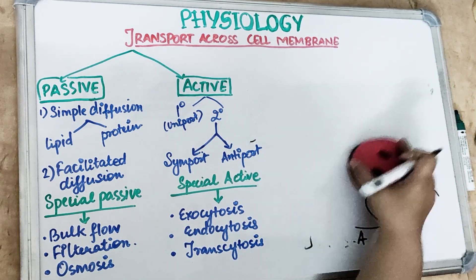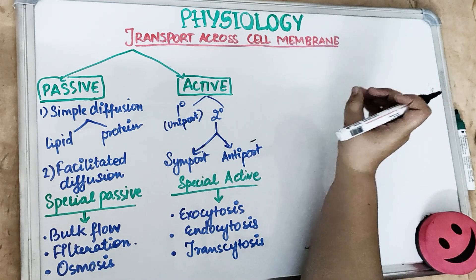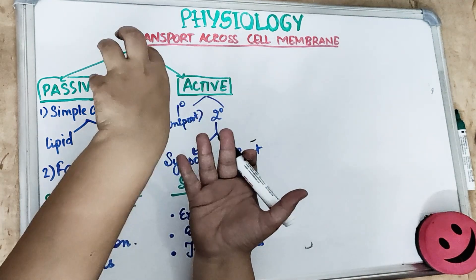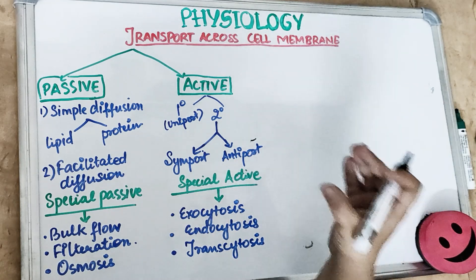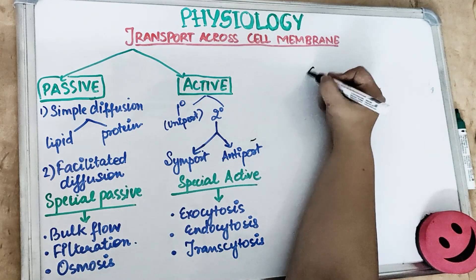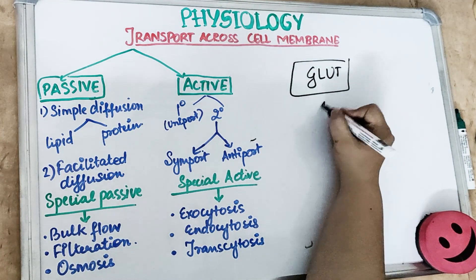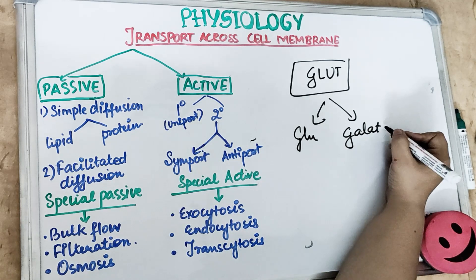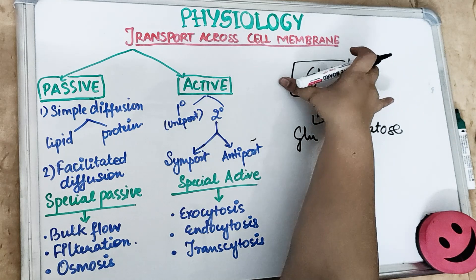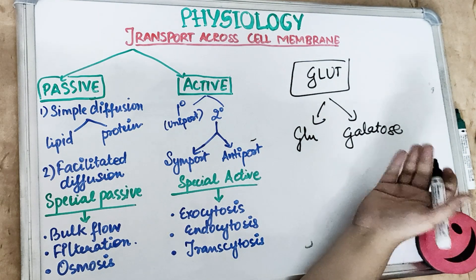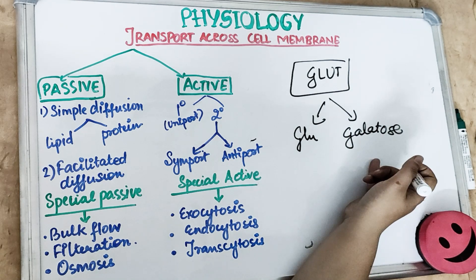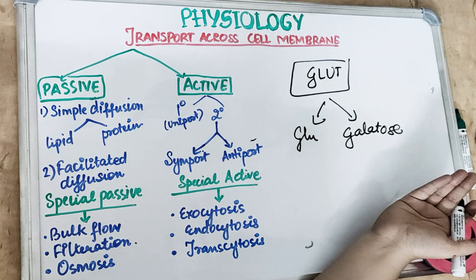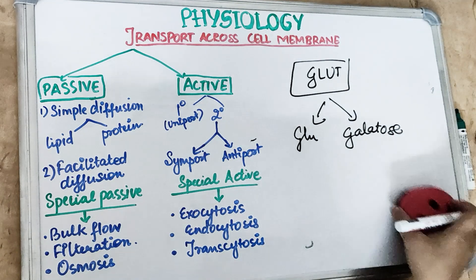Facilitated diffusion occurs through a carrier protein. It has a property called stereospecificity - certain carrier proteins are specific for certain substances. For example, GLUT is a carrier protein that transports glucose and galactose. For urea, there are transporters UTA1 to UTA4, and for red blood cells there is UTB. Different carriers exist for different substances.